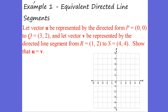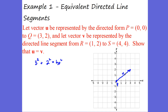Let's take a look at equivalent directed line segments. We have point P at (0, 0) and point Q at (3, 2). This gives us Vector U. How can we figure out the magnitude of Vector U? Well, Vector U has an X direction of 3 and a Y direction of 2. If I do 3 squared plus 2 squared, that equals the hypotenuse squared — we're doing our Pythagorean theorem. It's broken up into an X component and a Y component — those are the components of Vector U.